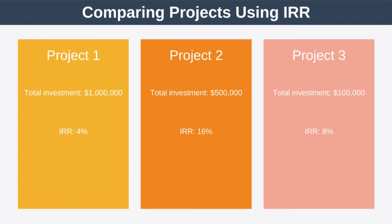Now you've learned how to calculate IRR for a single project. However, the real power of IRR is that it allows you to compare different projects. Suppose we have three projects under consideration for investment. By calculating the internal rate of return for each, we can weigh them up against each other, even though each project requires a different level of investment. In this example, project two is the best investment in terms of IRR because it's the highest. But one thing to note is that you're not just comparing projects to each other — you also have to consider what else you could do with your money. For example, if you could earn 20% interest from the bank, then it would make more sense to put the money in your bank than to do any of these projects.